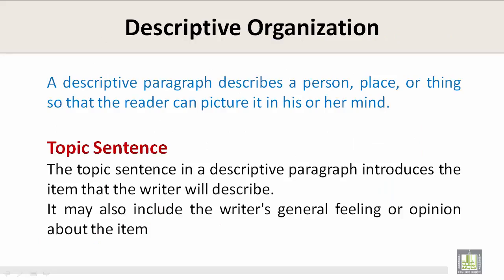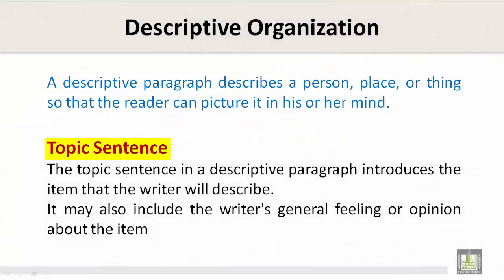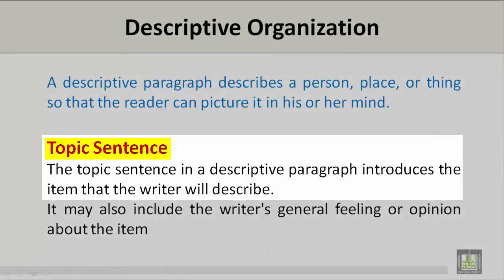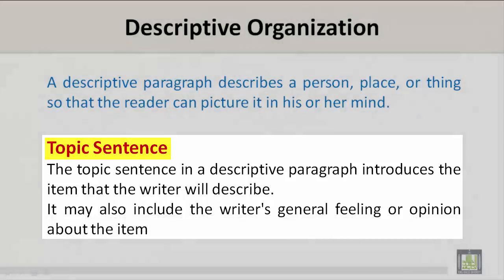Descriptive Organization. A descriptive paragraph describes a person, place, or thing so that the reader can picture it in his or her mind. Topic Sentence: The topic sentence in a descriptive paragraph introduces the item that the writer will describe. It may also include the writer's general feeling or opinion about the item.